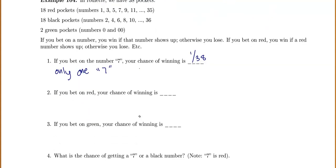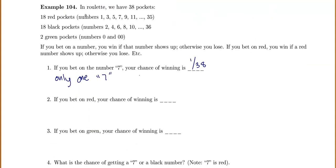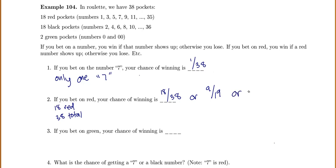If you bet on red, your chance of winning is 18 reds out of a total of 38. You can simplify this fraction by dividing top and bottom by two to get nine out of 19, or as a decimal 0.473, or as a percentage 47.3%.